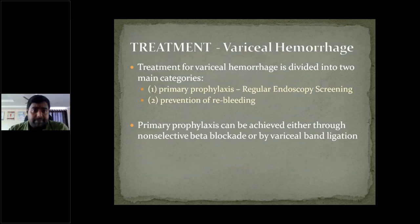The treatment of variceal hemorrhage is of two types: primary prophylaxis and prevention of re-bleeding. For primary prophylaxis, the patient should undergo regular endoscopic screening once in six months to assess the size of variceal hemorrhage or any bleeding spots. If the varix is increasing in size, endoscopic variceal banding and prescription of non-selective beta-blockers are used as primary prophylaxis.